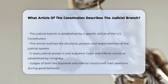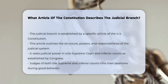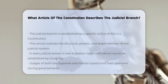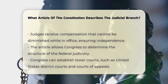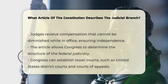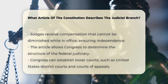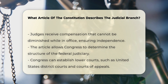The judicial branch of the United States government is established and empowered by a specific article of the Constitution. This article outlines the structure, powers, and responsibilities of the judicial system. The article vests the judicial power of the United States in one Supreme Court and in such inferior courts as Congress may from time to time ordain and establish. It specifies that judges, both of the Supreme and inferior courts, shall hold their offices during good behavior and receive compensation that shall not be diminished during their continuance in office.